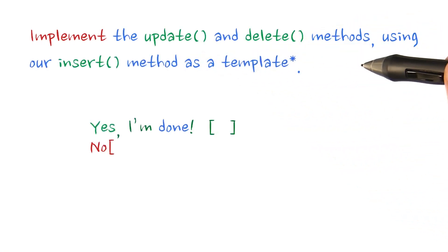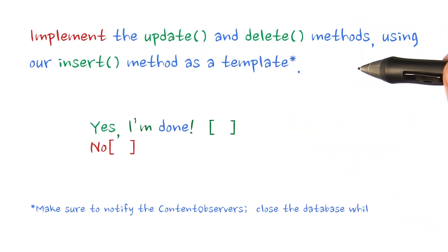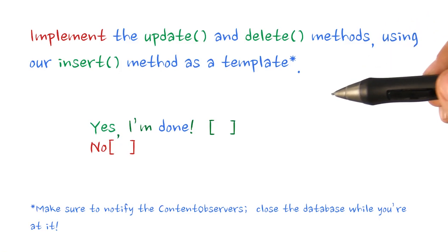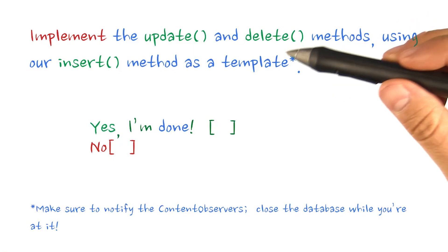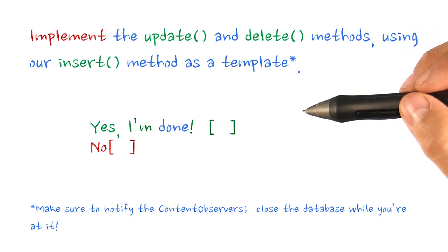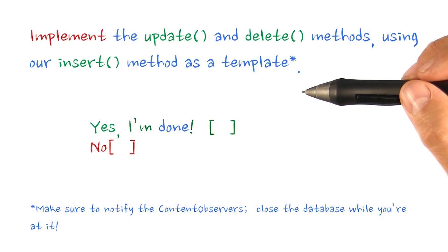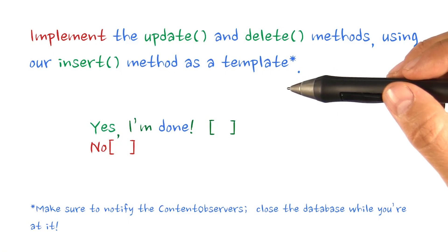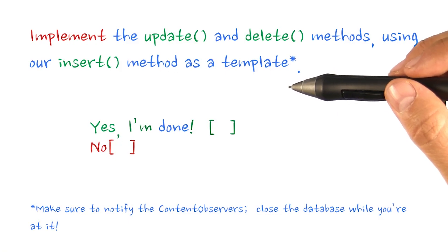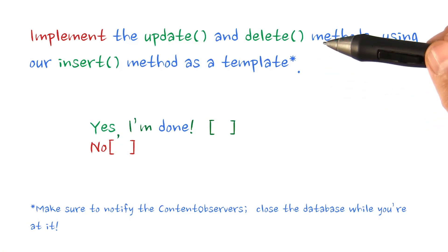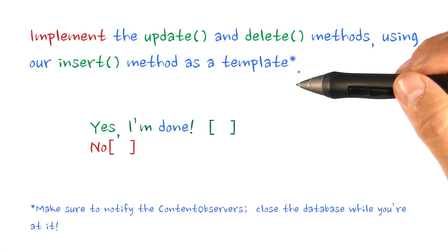The update and delete methods look a lot like the insert method, except they update and delete, and both return the rows modified rather than a URI upon completion. As you complete each section, uncomment the test update or test delete test to check your result.